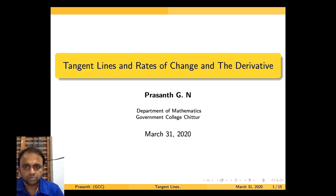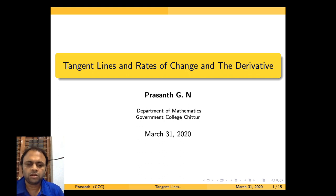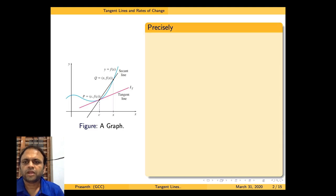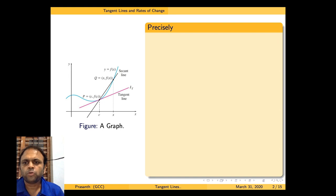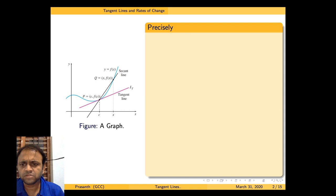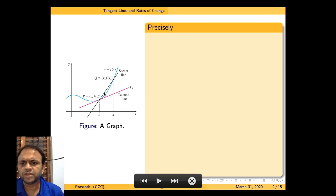I hope you remember: given a line and two points on a line, you know what is the equation of the line passing through these two points. Now you have a graph given on the left side, y equal to f of x, with two points P(c, f(c)) and Q(x, f(x)). The line passing through P and Q we call a secant line.